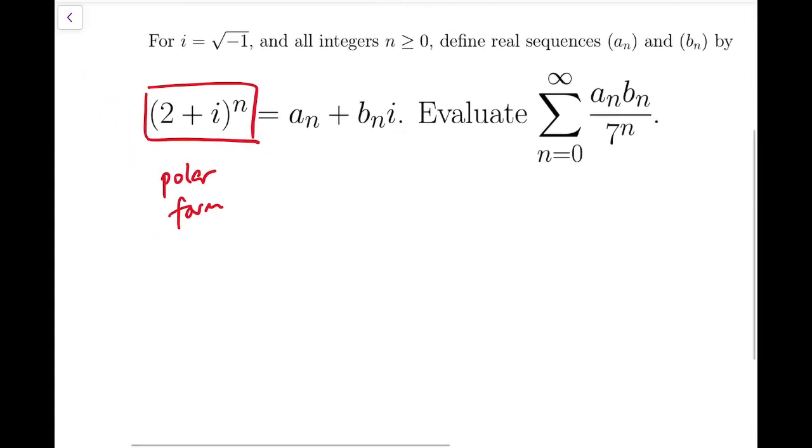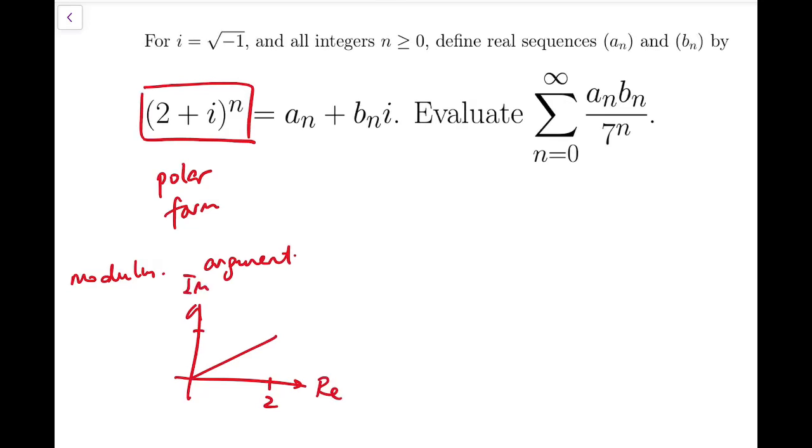The polar form uses polar coordinates - the magnitude or modulus, and the argument, which is the angle. For 2+i, that's 2 for the real part and 1 for the imaginary part. Here's 2+i, and we consider the angle.